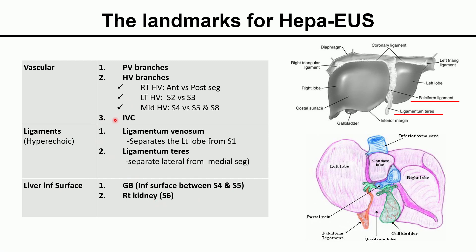Vascular structures include the portal vein, hepatic vein, and inferior vena cava. Ligaments are the ligamentum venosum and ligamentum teres. Ligamentum venosum separates the left lobe from S1. Ligamentum teres separates the lateral from the medial segment.